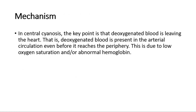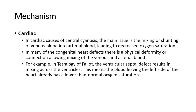In central cyanosis, the key point is that deoxygenated blood is leaving the heart — that is, deoxygenated blood is present in the arterial circulation even before it reaches the periphery. This is due to low oxygen saturation or abnormal hemoglobin. In cardiac causes of central cyanosis, the main issue is the mixing or shunting of venous blood into arterial blood, leading to decreased oxygen saturation. In many of the congenital heart defects, there is a physical deformity or connection allowing mixing of the venous and arterial blood.